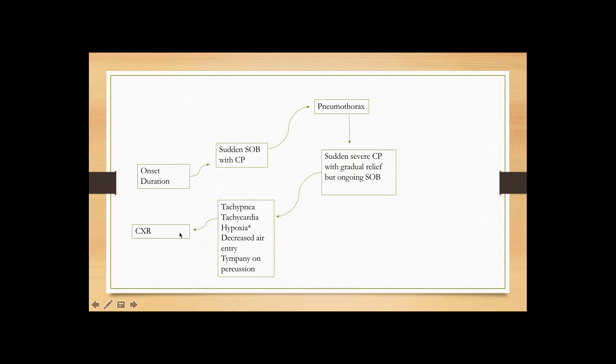We also do a chest X-ray to see the extent of pneumothorax. Most people with pneumothorax involving more than 50% of one lung will develop very classic symptoms, but those with very small pneumothorax — less than 10% of the lung — usually don't have any symptoms. The patient may come in with very mild or very severe symptoms, and depending on the extent seen on chest X-ray, we decide whether to intervene or observe.